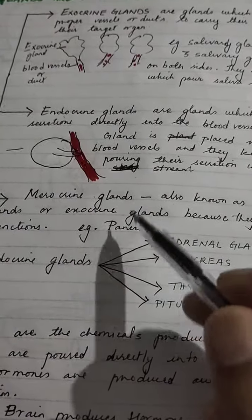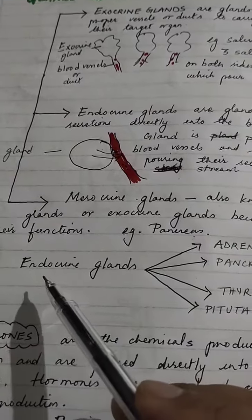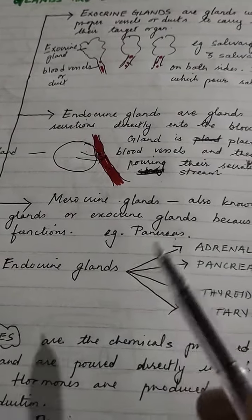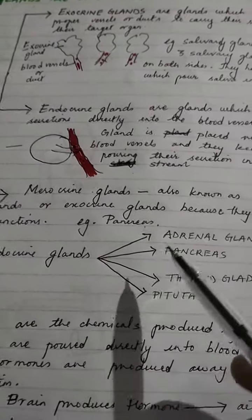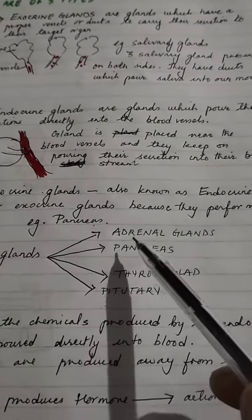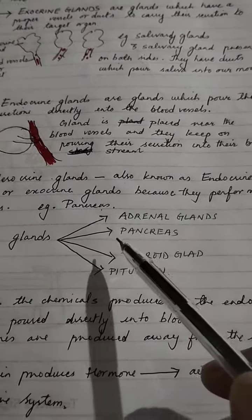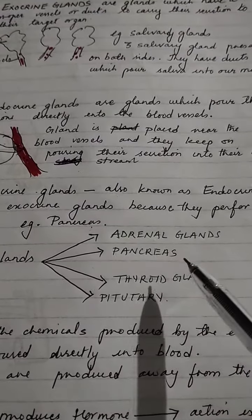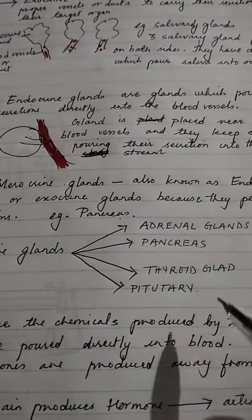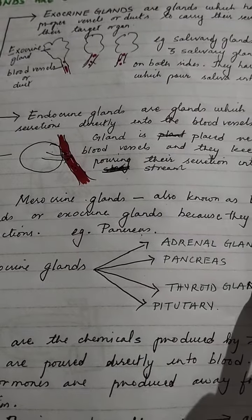For now, we just have to focus on the endocrine glands. According to the syllabus, we have the adrenal glands, the pancreas, the thyroid gland, and the pituitary gland.